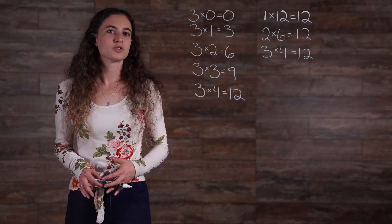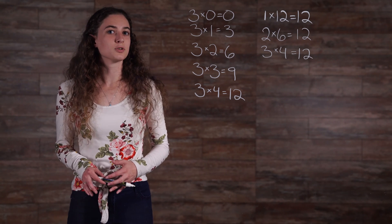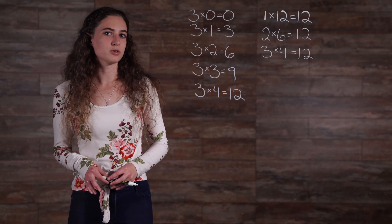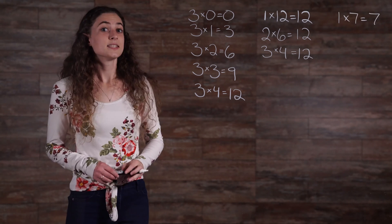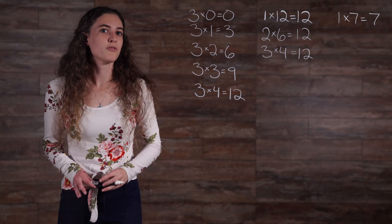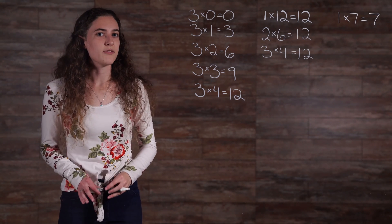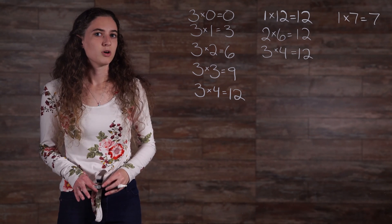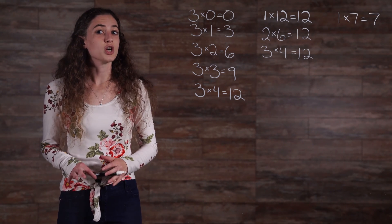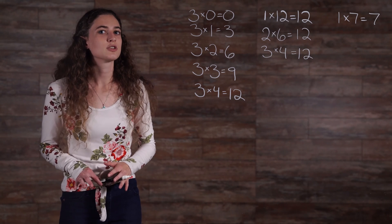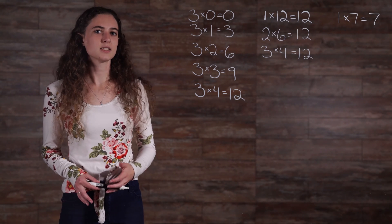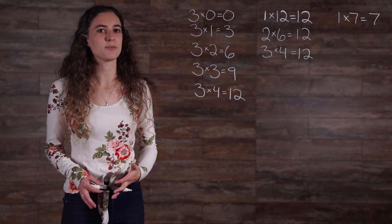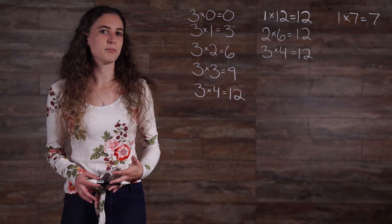Other numbers are only multiples of 2 numbers. For example, 7. 7 is a multiple of 1 and 7 only. 1 and 7 are the only factors of 7. Because of this, 7 is an example of a prime number.